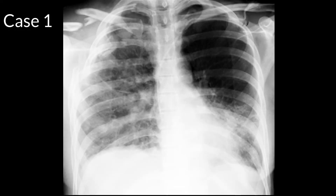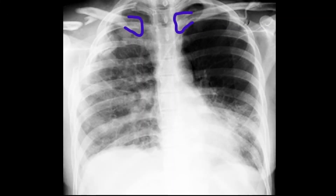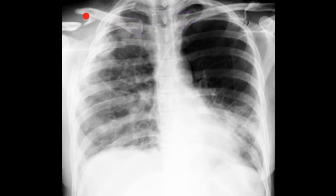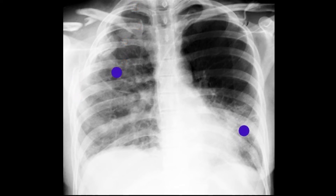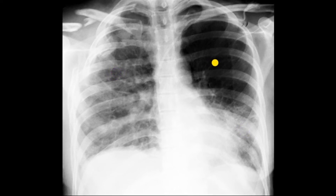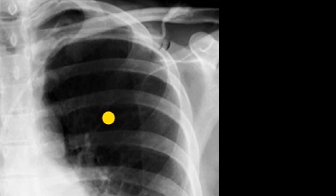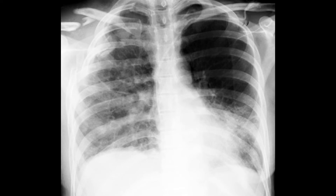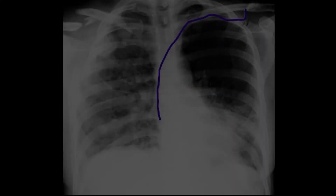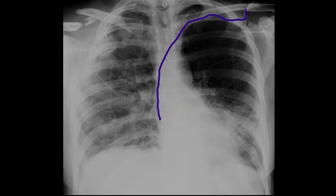Case one — looks like a fair bit happening here. Starting with A, adequacy: it is a bit rotated, but penetration's okay and I can see all the lungs bilaterally. B, bones: there's a fractured clavicle, fractured ribs posteriorly — at least four, maybe five. The scapulae and vertebrae look okay. L, lungs: increased whiteness diffusely on the right-hand side and also the left base — probably some contusion, maybe a bit of hemothorax. It looks a bit black at the top on the left — I was wondering about a pneumothorax, but I can't see one. Soft tissue: no air in the soft tissues. Software: there's a central line, subclavian, on the left-hand side.